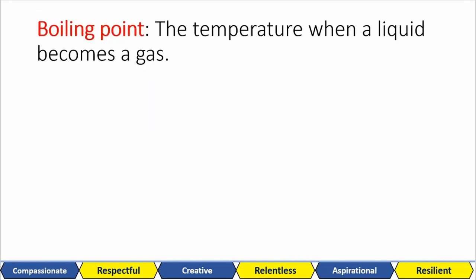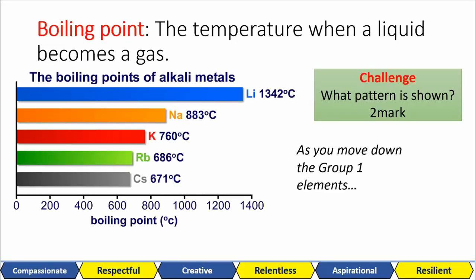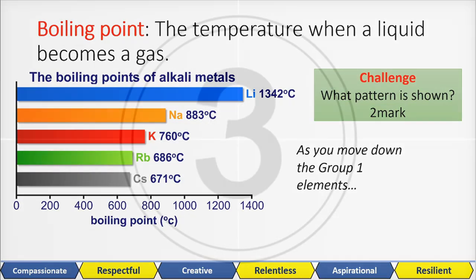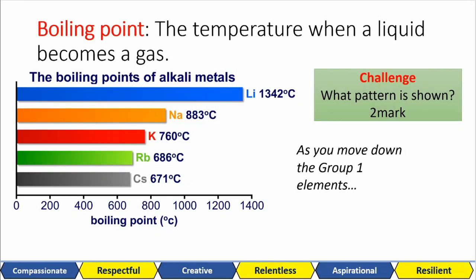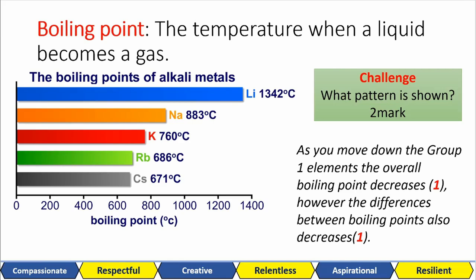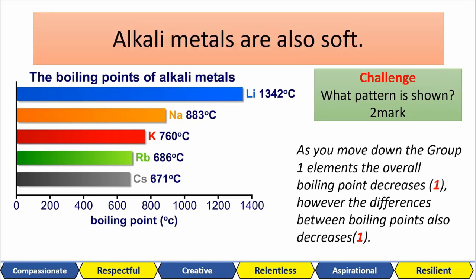The last physical property that we're going to look at is boiling point. Just like before, describe the trend you see. And since this is two marks, you should give two distinct observations in your answer. As you move down Group One, the boiling point decreases one mark. But the differences between the boiling points also decrease. That's the second mark. Look at the large difference between lithium and sodium and then the small difference between rubidium and cesium. Alkali metals are also very soft compared to regular metals. They can be cut with a knife and you probably remember this in the alkaline metals and water demonstration.